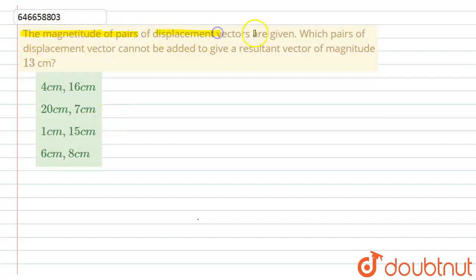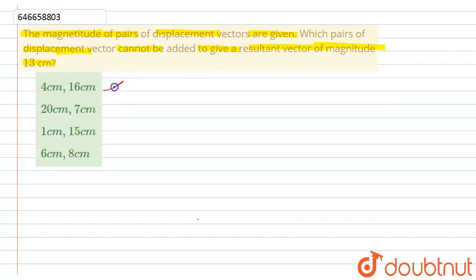The question is: the magnitude of pairs of displacement vectors are given. Which pairs of displacement vectors cannot be added to give a resultant vector of magnitude 13 centimeters? We have four options showing pairs of displacement vectors, and we have to find the pair which cannot give a resultant of magnitude 13 centimeters.